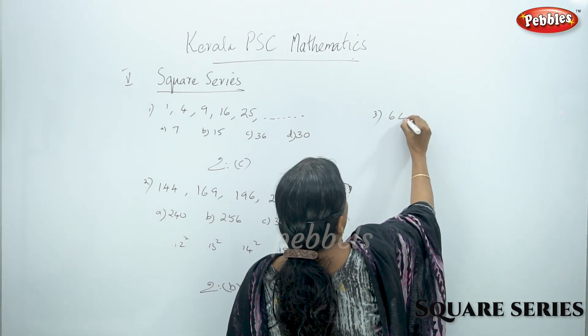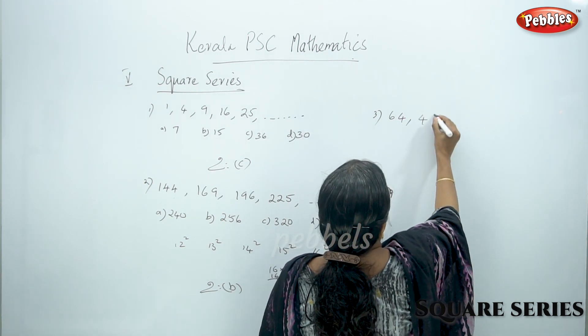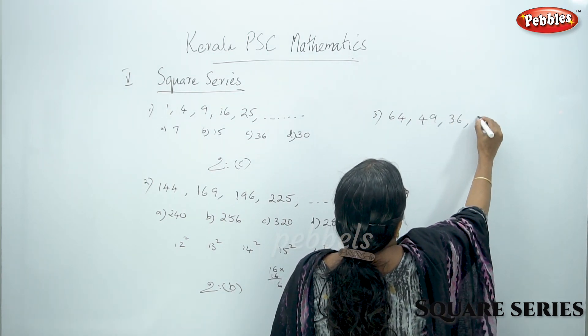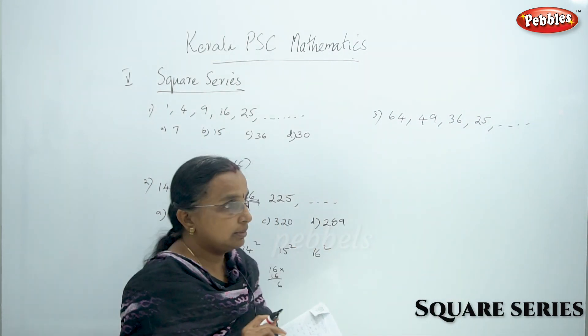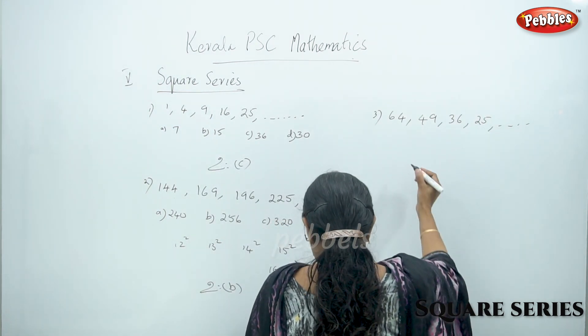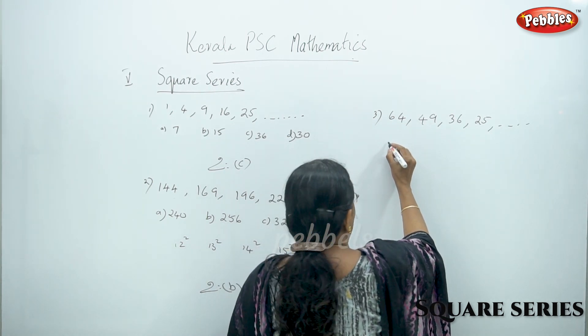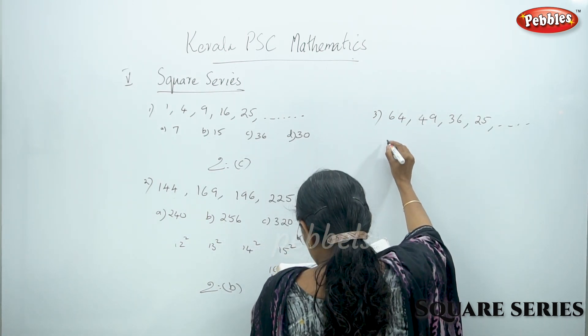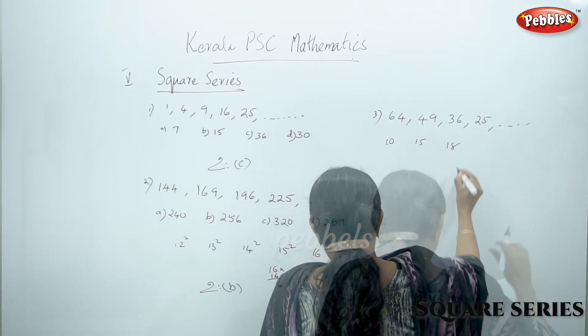This is 64, 49, 25, 25. This is a decrease in the series. In square series, it is a decrease. You can tell the options here: 10, 15, 18, 16.